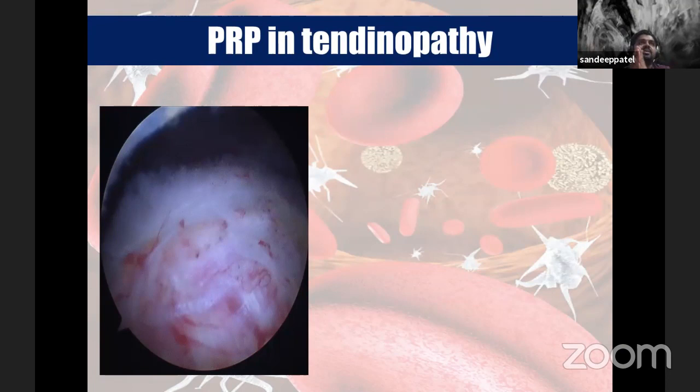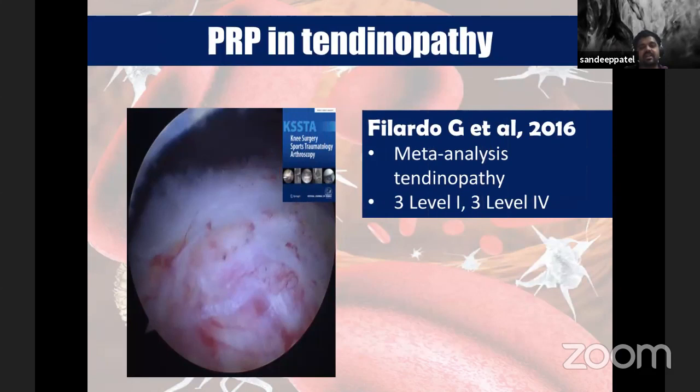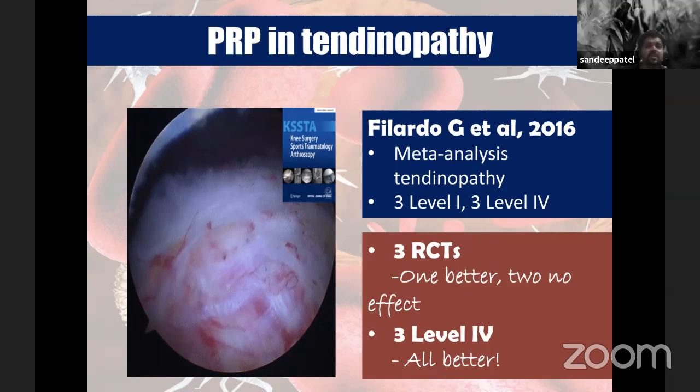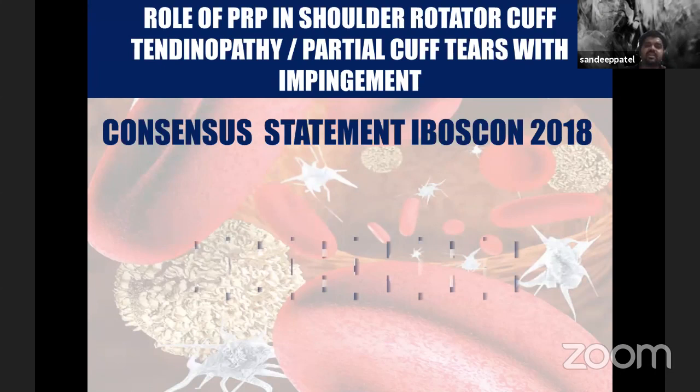For rotator cuff tendinopathy, PRP is used under ultrasound guidance as a pain management injection. However, good level 1 studies show that PRP does not have an added benefit over routine physiotherapy. Our consensus statement for partial tears or tendinopathies issued by the Indian Biological Orthopedic Society in 2018 was: there is no effect of PRP for rotator cuff tendinopathy.